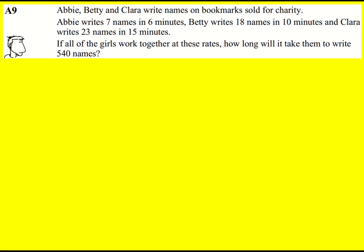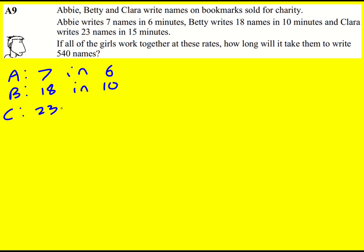We've got three girls working at different rates to write names on bookmarks, and overall we want to work out if they work together how long it will take them to write 540 names. So what I'm going to do is just first of all write down the information a bit more mathematically. So Abby is seven names in six minutes, Betty 18 in 10, and Clara 23 in 15.